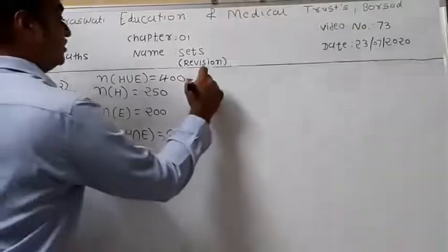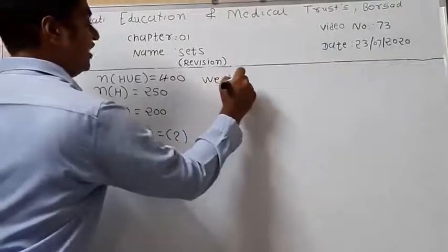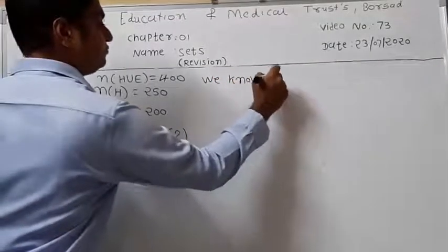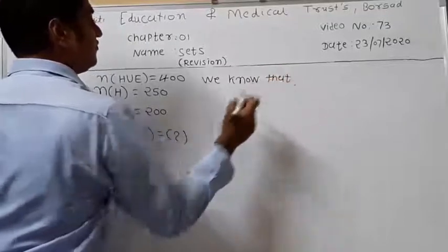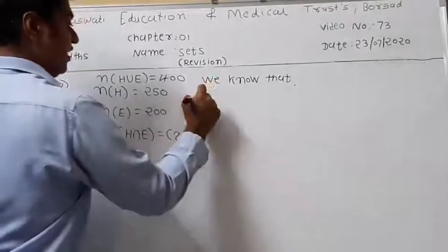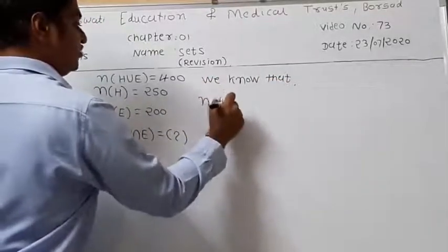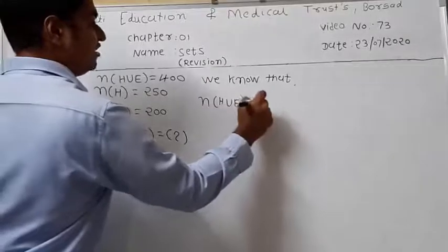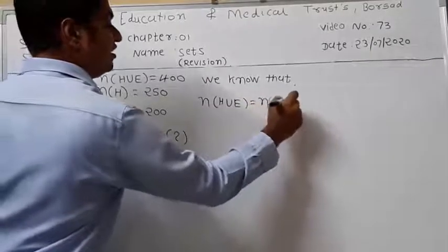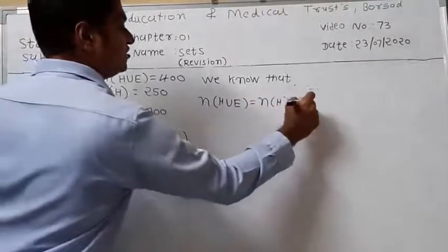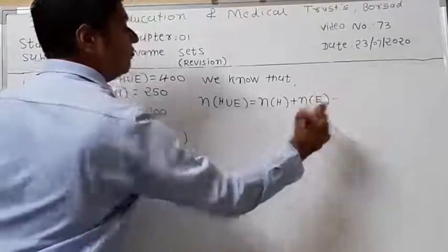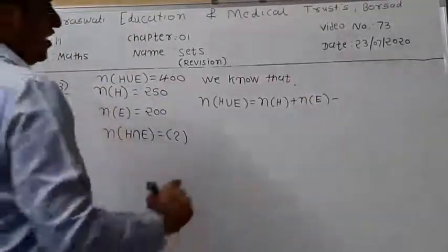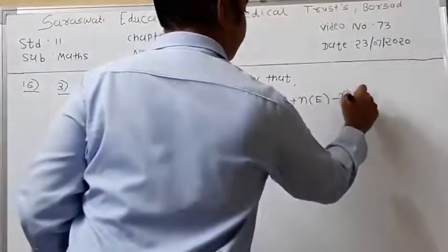Using the same formula: N of H union E is equal to N of H plus N of E minus N of H intersection E.